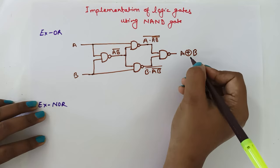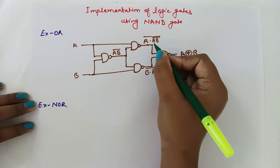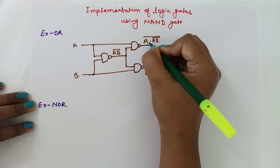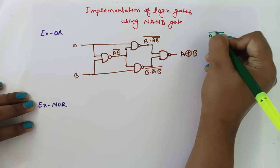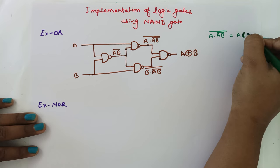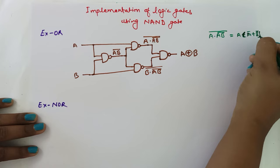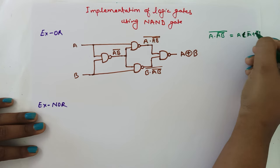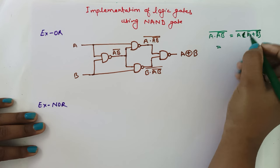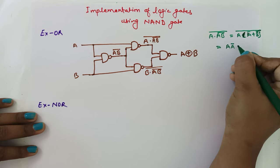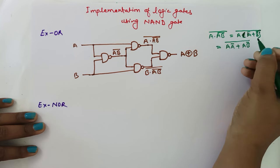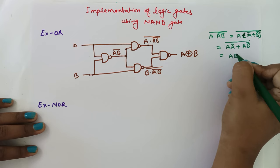Let me explain how this equals A XOR B by simplifying these two terms. For A dot AB bar whole bar, we apply De Morgan's law to AB bar to get A bar plus B bar, so the expression becomes A multiplied by A bar plus B bar, whole bar. Expanding gives A·A bar plus A·B bar, whole bar. Since A·A bar equals 0, this simplifies to AB bar whole bar.